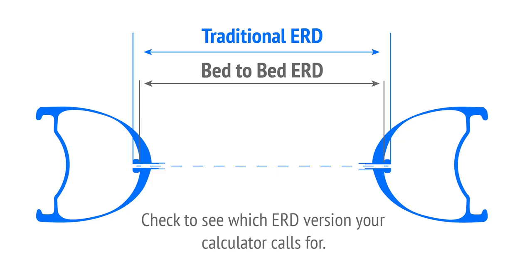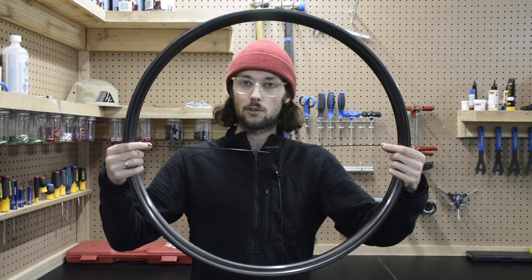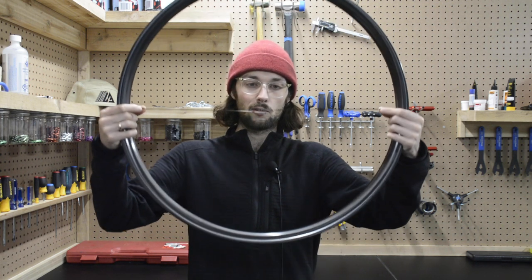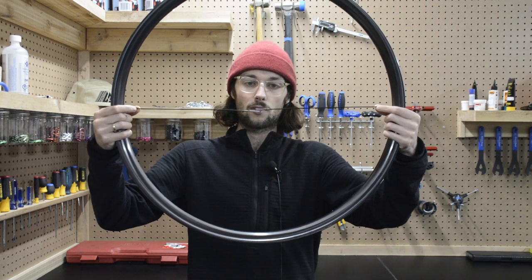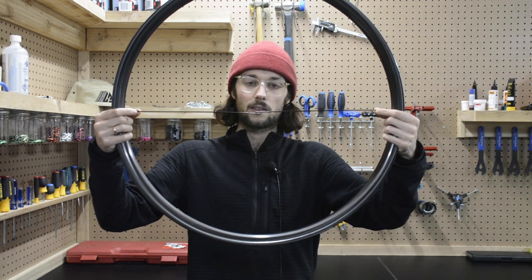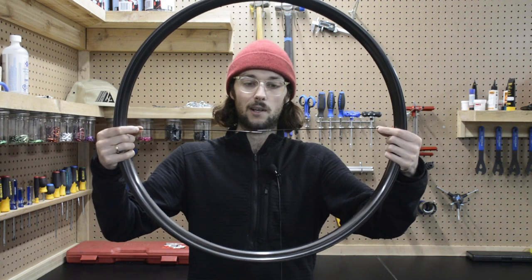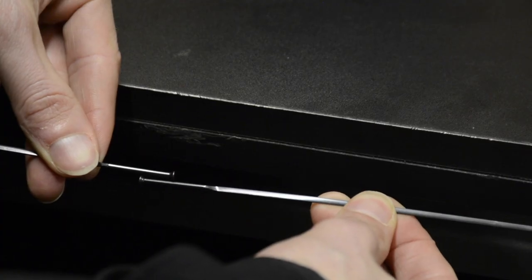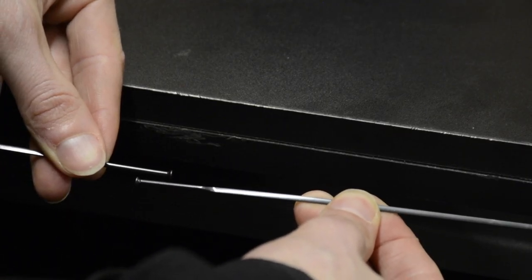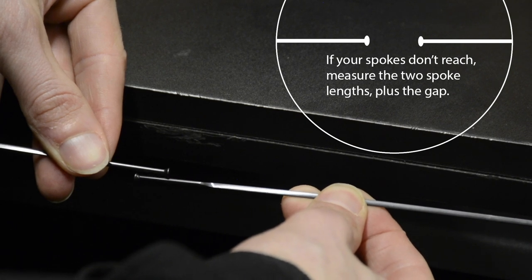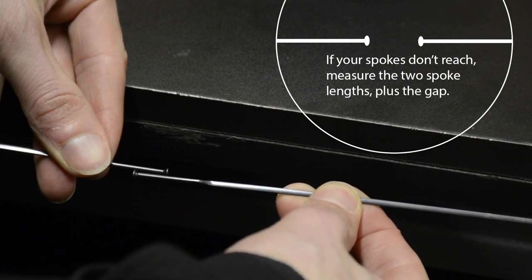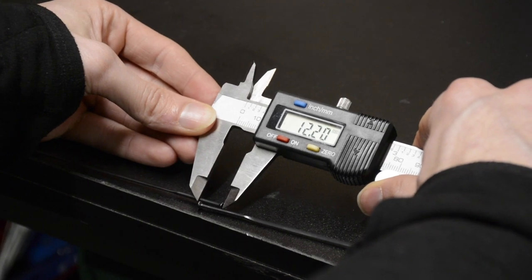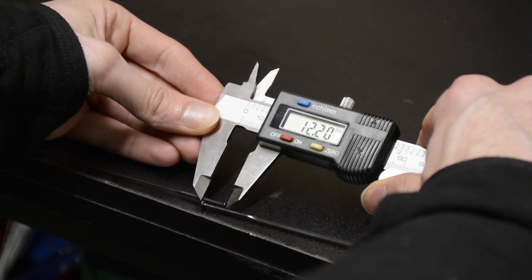When measuring the ERD yourself, you want to know how long the spokes are that you're using. This way you can take the distance of those two spokes combined, overlap them on opposite sides of the rim, measure the distance that they're overlapping, and subtract that from the distance of the two spokes combined — that's going to give you your ERD. For example, each of these spokes is 300 millimeters, so when you put them through opposite holes and line them up you can get a caliper reading. For this rim you would take 600 minus 12, and that gives you the ERD.